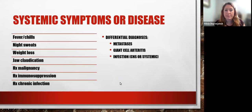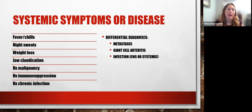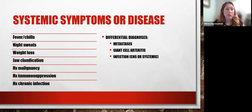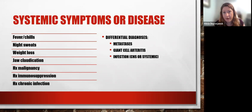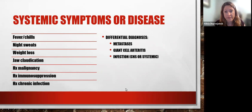Starting with systemic symptoms or disease: if your patient presents with headache associated with fever, chills, night sweats, weight loss, jaw claudication — weakness in the jaw while chewing or talking — history of malignancy, immunosuppression such as HIV, immunomodulating medications, or chronic infections, we need to be mindful these could be secondary headaches. The differential diagnosis includes metastasis, giant cell arteritis, or systemic or CNS infection.